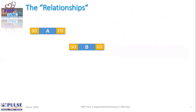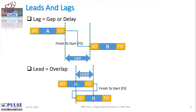Let's take one of the most common relationships that everybody is aware of: Activity A finishes and only then Activity B starts. Activity A should have finished before Activity B starts, and therefore we call it FS, or Finish to Start. I keep repeating this so you write it down and don't get confused with Float.